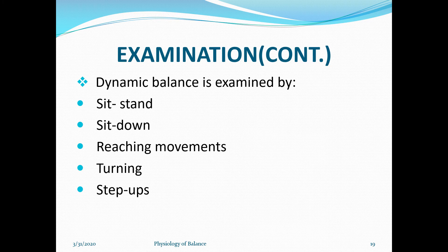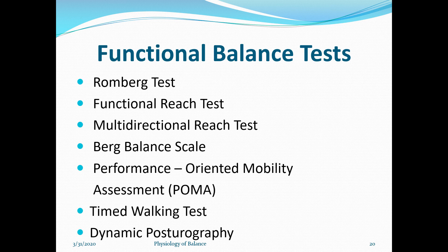For dynamic balance, movements such as sit to stand, stand to sit, reaching movements, turning, and step ups can tell you how an individual is dynamically balanced. For functional balance testing, key tests include the Romberg test, functional reach test, multidirectional reach test, Berg Balance Scale, Performance Oriented Mobility Assessment (POMA), timed walking test, and dynamic posturography. Remember especially the Romberg test, functional reach test, multidirectional reach test, and Berg Balance Scale as basic tests.